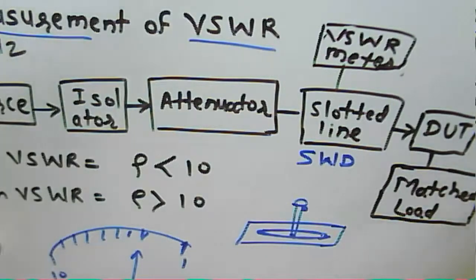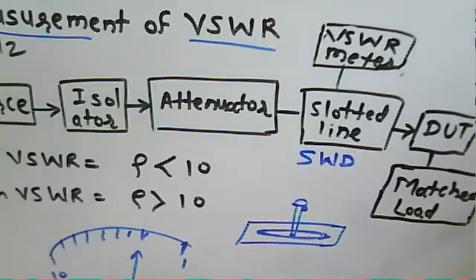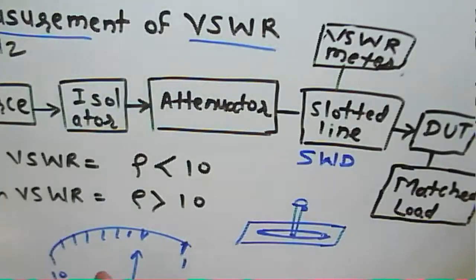There are three different scales on the VSWR meter: the normal scale, the expanded scale, and the dB scale. When using the dB scale with the gain control knob, if the knob is at position 1, multiply by 10; if at position 2, multiply by 20. This gives the gain in dB. The gain control knob position must be noted and multiplied by the respective number to obtain the final VSWR value.